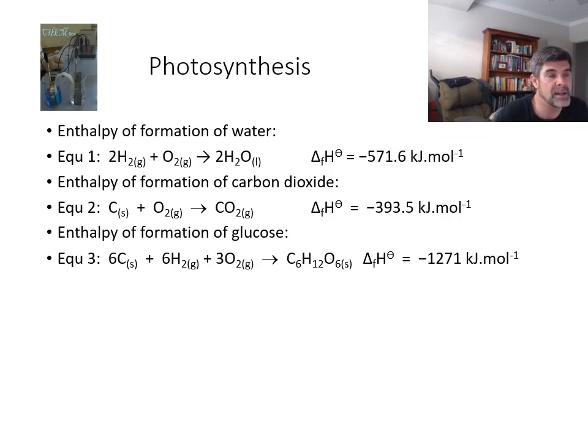So here are three equations. The first one represents the enthalpy of formation of water, one we've looked at in the past. The second looks at the enthalpy of formation of carbon dioxide, and the third, the enthalpy of formation of glucose. Now, how do we use this information to work out what we're going to do in this whole process of photosynthesis?